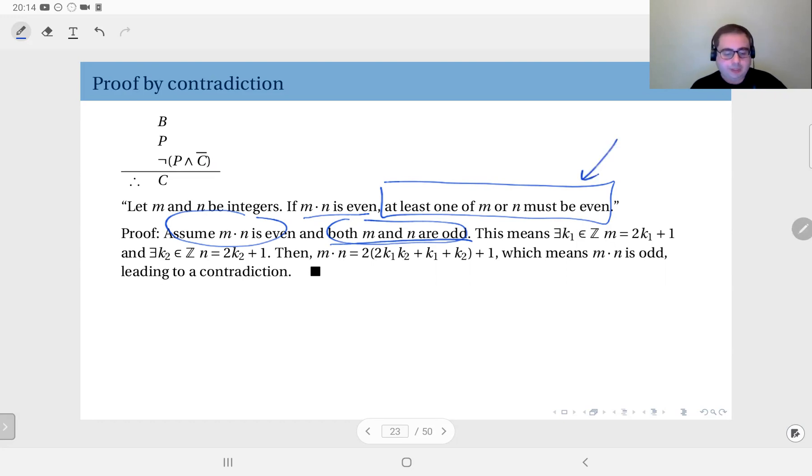Now m times n is even and m is odd, n is odd. This means there exists an integer k1 where m equals 2k1 plus 1 by definition of odd numbers, and similarly n equals 2k2 plus 1 for some integer k2.